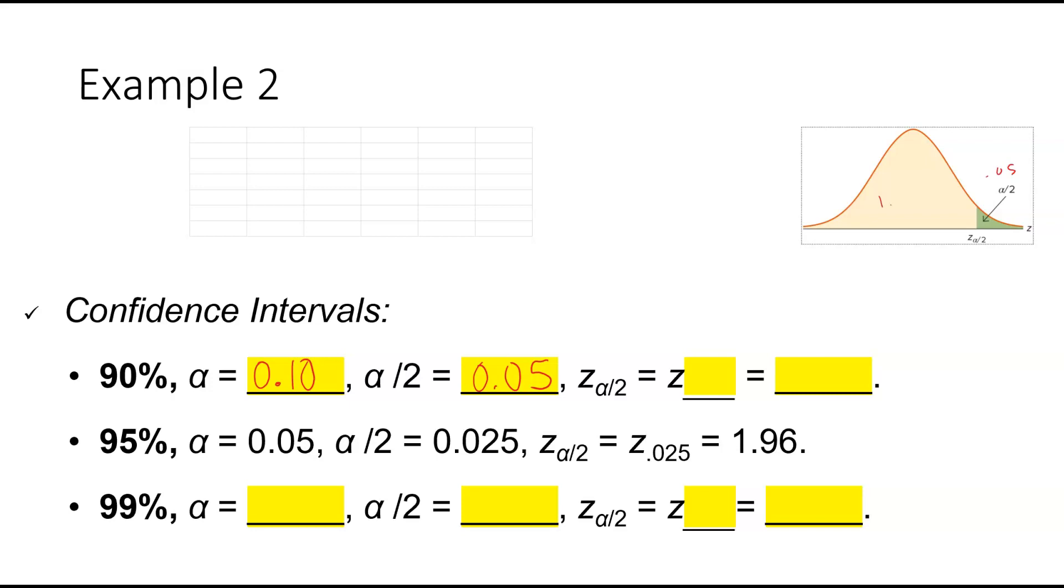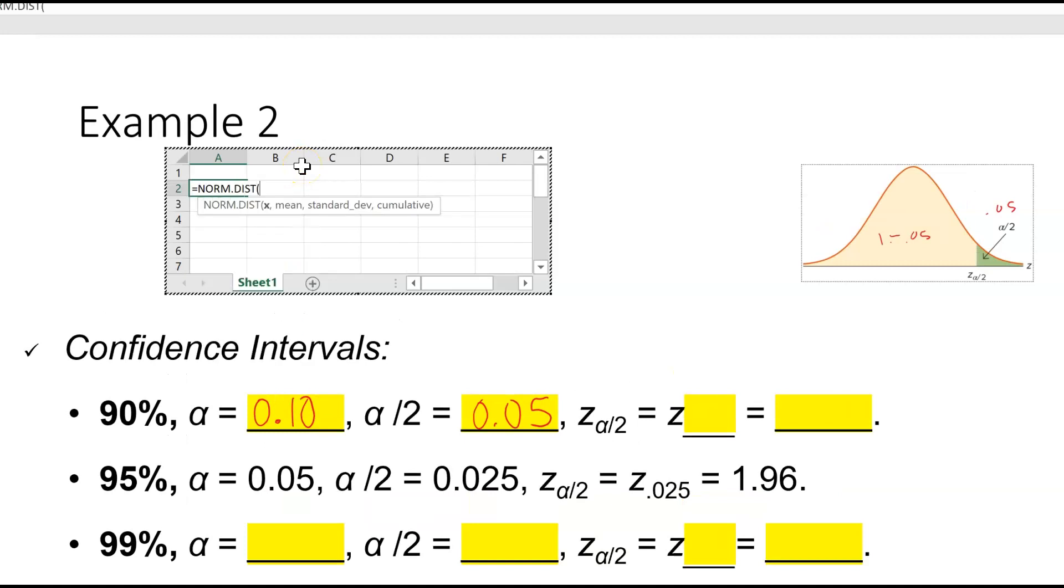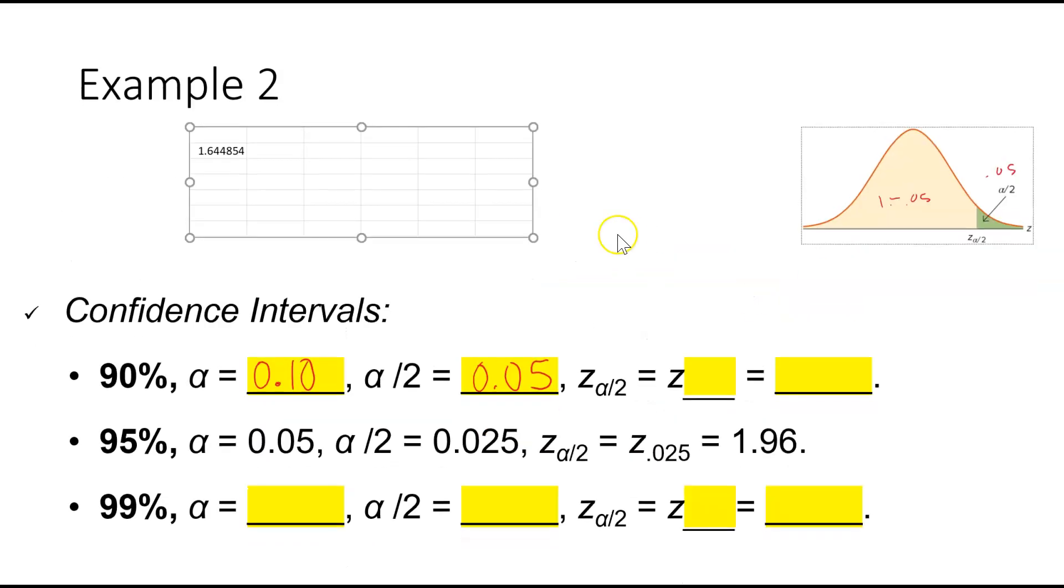Now, if we want to find the critical value associated with alpha over 2, when alpha over 2 is 0.05. So here we want to find, to the left, 1 minus 0.05. So when we calculate this, we're going to be doing norm.inv because we're trying to find the z-score. We have the probability. We know that it's 1 minus 0.05 and it's standard, so 0 and 1. So the associated z-score with 90%, the critical value here, we get 1.645. So when we're talking about a confidence level of 90%, our associated z-score is 1.645.